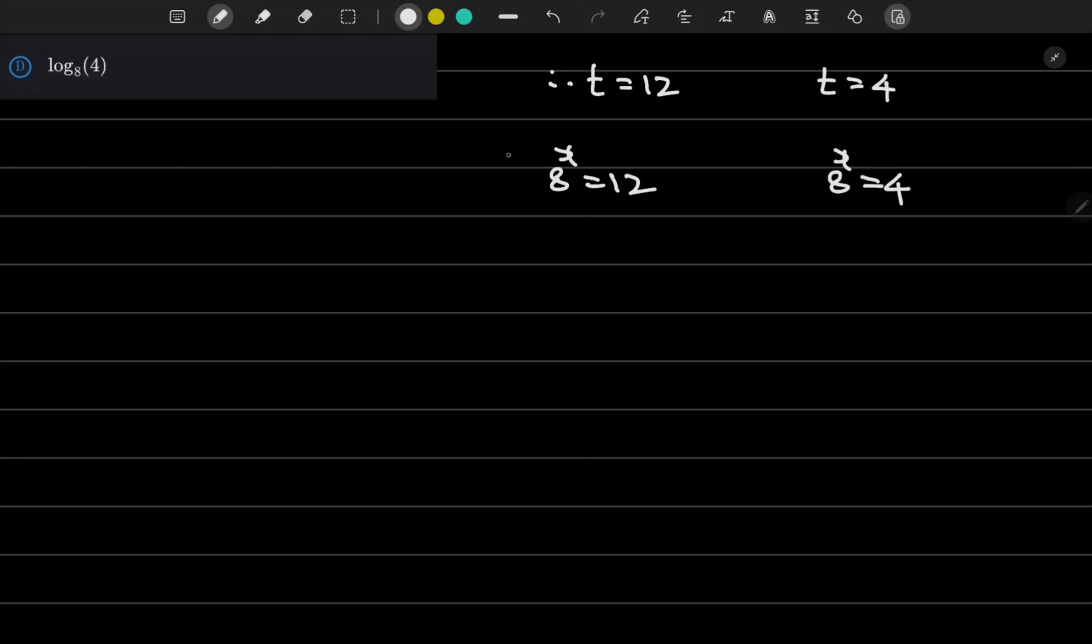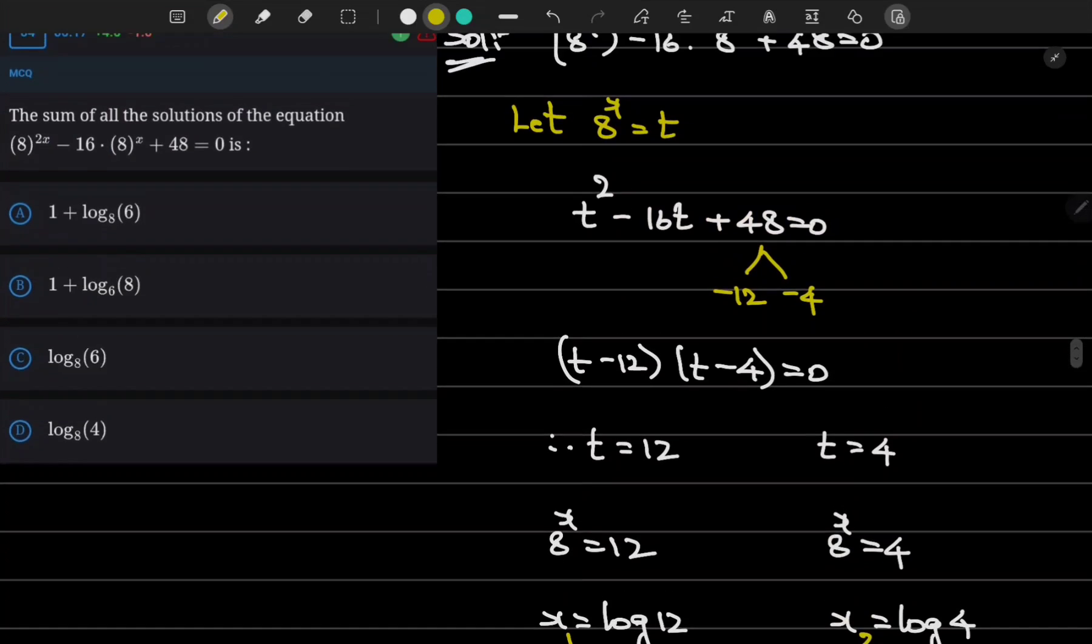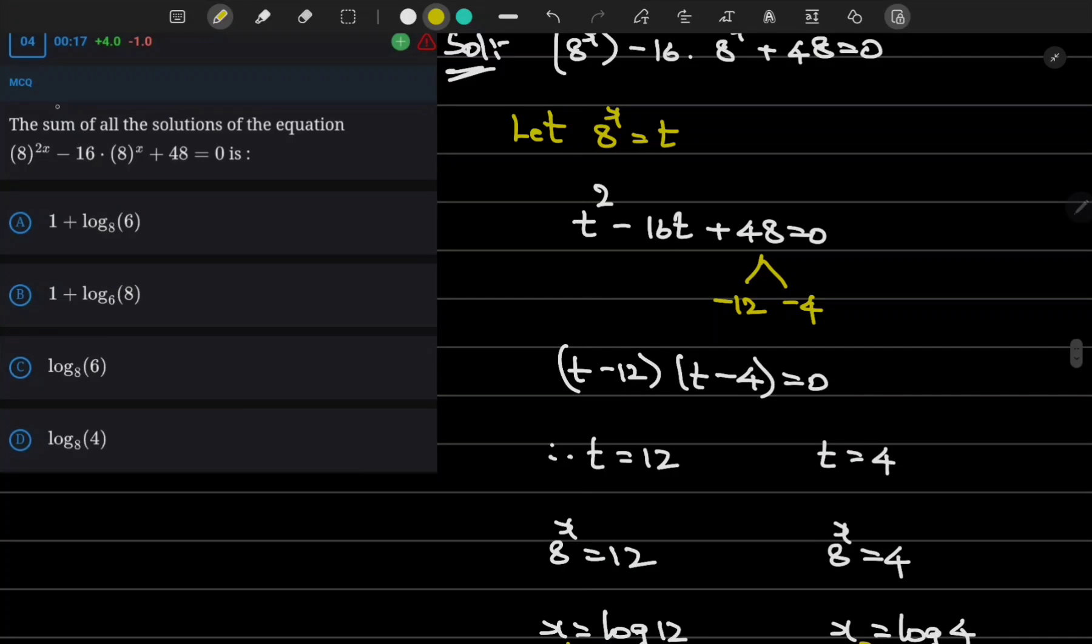Now it is in exponential form; it can be written into logarithmic form where x = log₈(12) and x = log₈(4). Now in the question he asked us to find the sum of all the solutions.